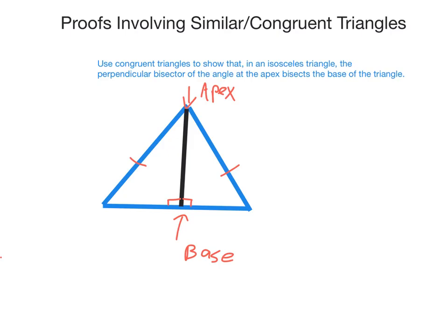We know that it's true, but we need to prove it using congruent triangles. Now I've got this perpendicular bisector, and I have two triangles — one here and another one there. If I show that these two triangles are congruent, then there will be three pairs of equal sides. This line here and this line here are corresponding sides of the triangles.